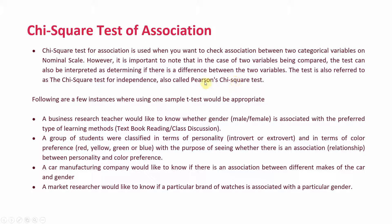The test is also referred to as the chi-square test of independence, also called Pearson's chi-square test. Here are a few situations in which the chi-square test is appropriate. A business research teacher would like to know whether gender — male or female — is associated with the preferred type of learning methods, such as textbook reading or class discussion.